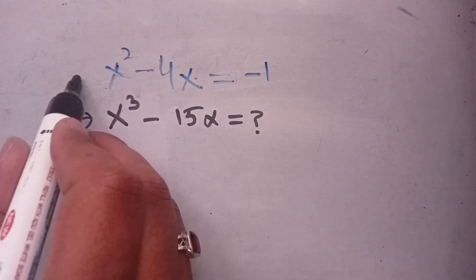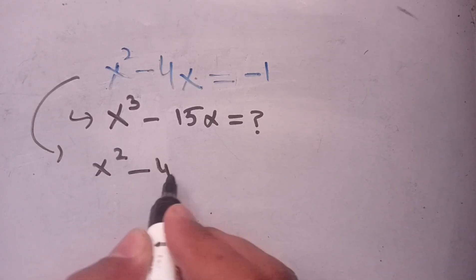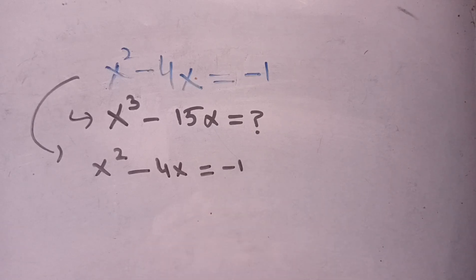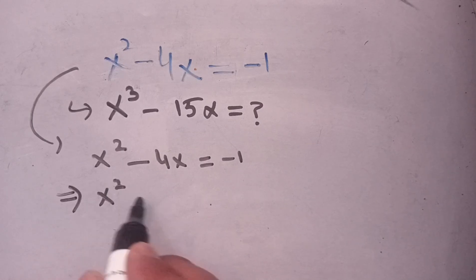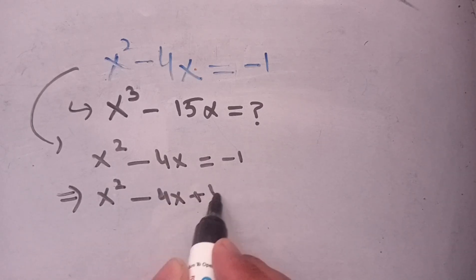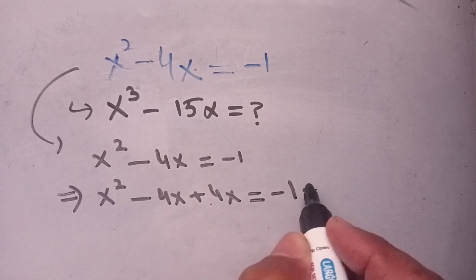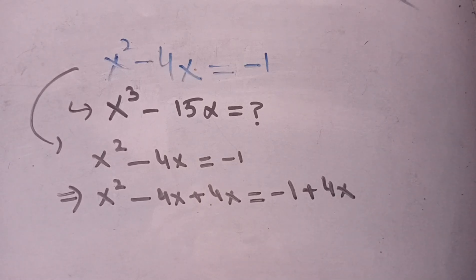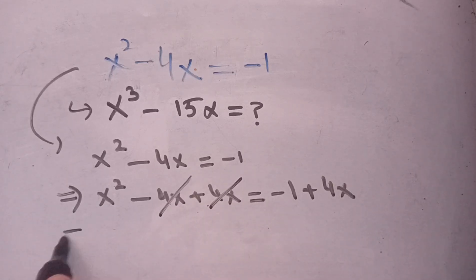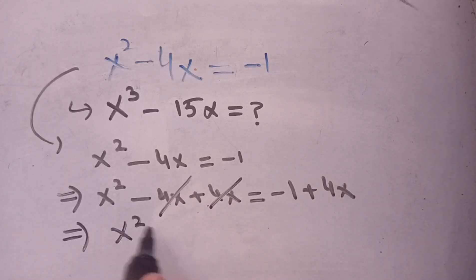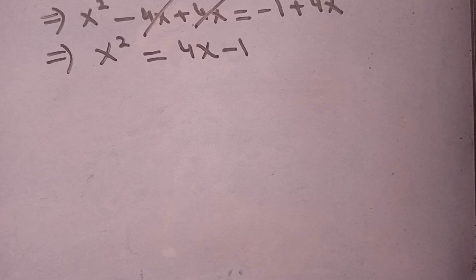Let us solve this. First of all, we take the given equation: x squared minus 4x equals minus 1. In the next step, we add 4x on both sides, giving us x squared minus 4x plus 4x equals minus 1 plus 4x. We cancel the minus 4x and plus 4x, so x squared equals 4x minus 1.